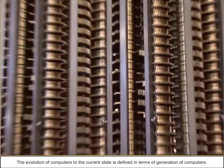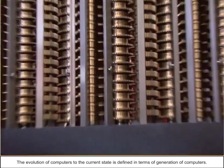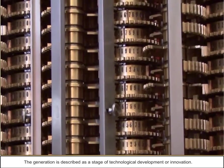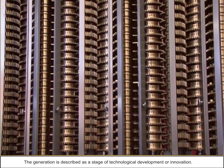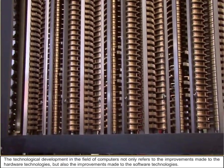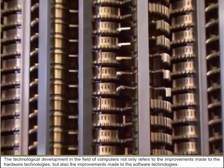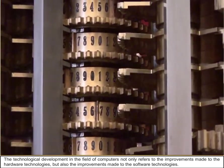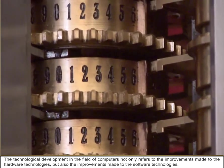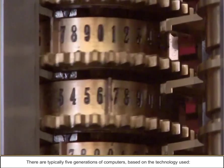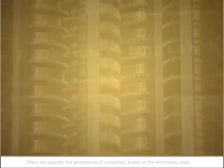The evolution of computers to the current state is defined in terms of generations of computers. The generation is described as the stage of technological development or innovation. The technological development in the field of computers not only refers to the improvements made to the hardware technologies, but also the improvements made to the software technologies. There are typically five generations of computers based on the technology used.